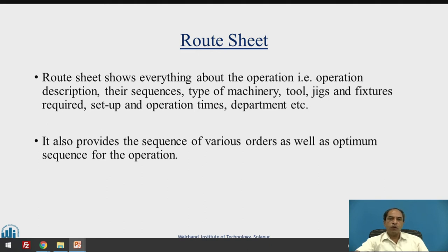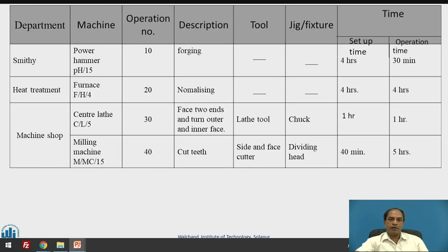The route sheet also provides the sequence of various operations as well as the optimum sequence of those operations. We have to think of optimization of sequences — the sequence that is most economical and at the same time feasible for meeting customer requirements. Here is a simple example of a route sheet and how it will appear. It consists of columns like department, machine, operation number, description, tooling, jigs, fixtures, and time — divided into setup time and operational time.